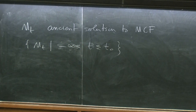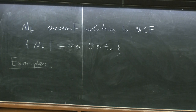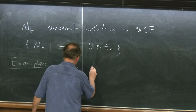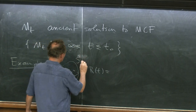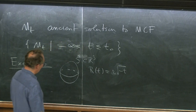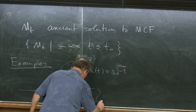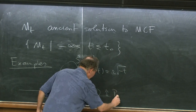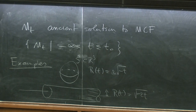An ancient solution to mean curvature flow is a solution that is defined for all T less than or equal to zero, or more generally less than or equal to some time. The important thing is that the solution exists for all negative times. Examples include any minimal surface, which is stationary, and the sphere S² in R³ with radius square root of minus 2t.